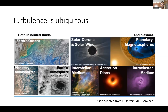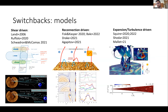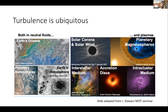Having introduced switchbacks and the main ideas behind their formation, I'll now briefly discuss turbulence. Turbulence is ubiquitous — we find it in natural fluids and plasmas, for example in Earth's oceans, planetary atmospheres, and our own atmosphere, as well as in astrophysical media like the solar corona and solar wind, which is the focus of this talk, and also in more exotic environments.